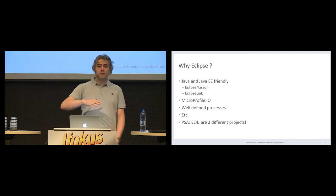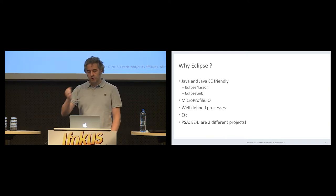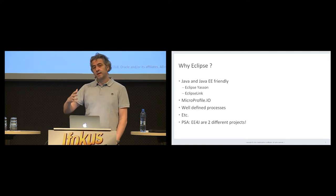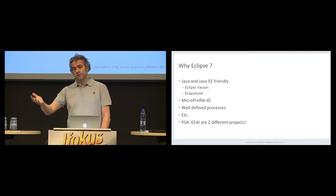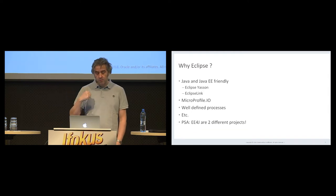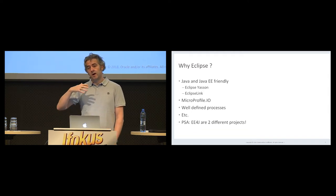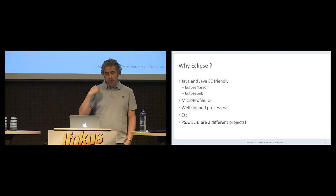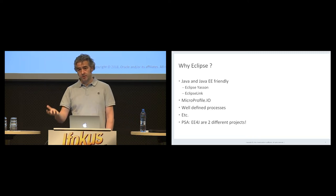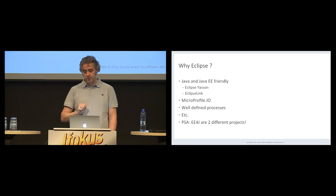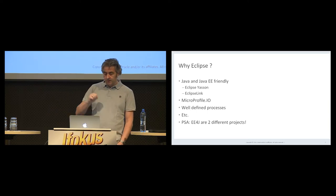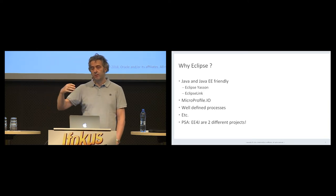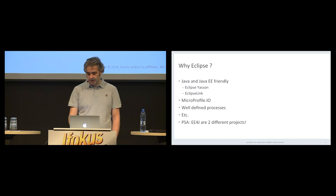The end goal of the EE4J project is basically to put everything in place so that we can evolve the enterprise Java platform at a more rapid pace in a more open way, so people are able to more easily contribute. We want to do that in a vendor-neutral way — it's not Oracle anymore in the driver's seat. This is really the end goal: how we can keep the platform relevant for the next 10, 20, 50 years.